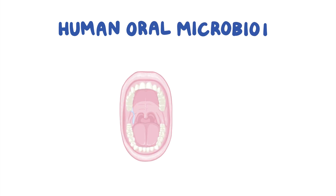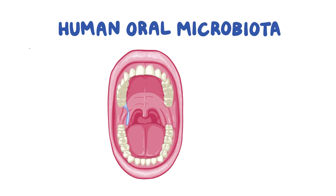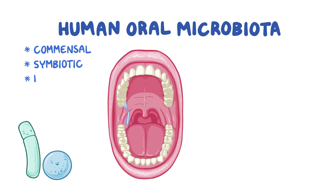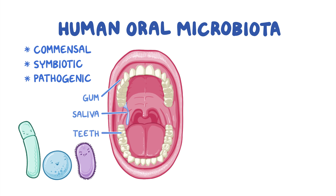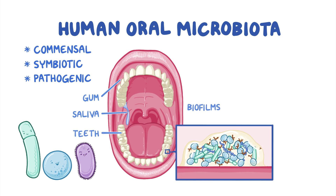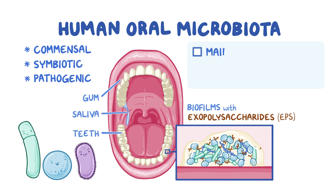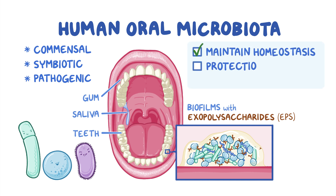The human oral microbiota is represented by the community of commensal, symbiotic, and pathogenic microorganisms which are normally found in the oral cavity. The oral microbiota is found in saliva, the surface of gum tissue and teeth, and in biofilms, which are basically layers of goop-like material made of exopolysaccharides or EPS, within which bacteria survive in a quiescent or slow-growing state. These microbes play an important role in maintaining oral homeostasis, protecting the oral cavity and preventing disease development.